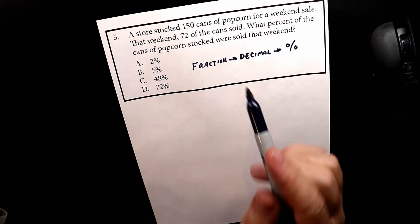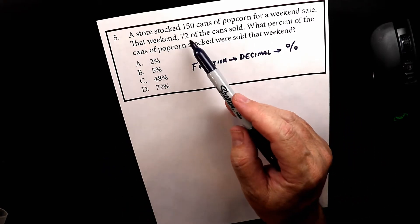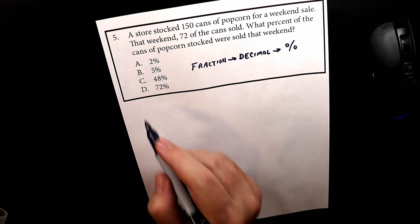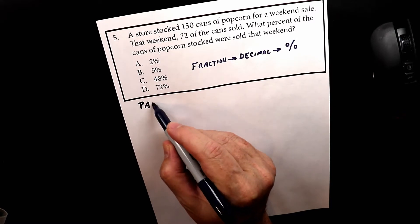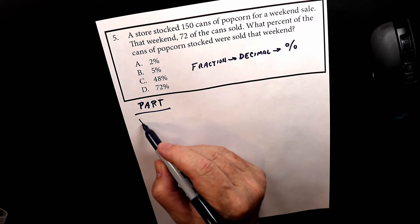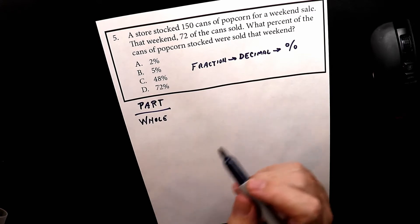So these are the three steps. When we're looking at the fraction that we need to find, we always look for what the total was. So the total number of popcorn that they had in stock was 150. And the way I like to remember this is that the part goes over the whole, or the total.